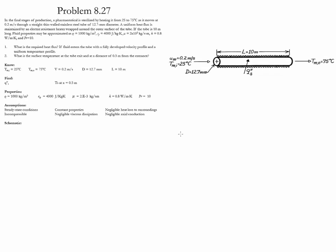Problem 8.27. In this problem we analyze a pharmaceutical as it is sterilized by heating it from 25 to 75 Celsius as it moves through a straight thin wall stainless steel tube at a rate of 0.2 meters per second. The diameter and the length of the tube are given as well as the properties of the pharmaceutical.